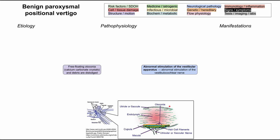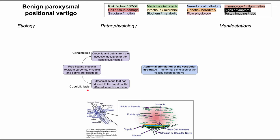When otoconia — those little stones — break off and float around, that's when problems start. The BPPV pathophysiology can take one of two directions. Canalolithiasis is when otoconia and debris from the acoustic macula enters the semicircular canals, working their way into the circular parts. Cupulolithiasis is when otoconial debris adheres to the cupula of the affected semicircular canal — the organ that helps determine which direction things are moving — and when otoconia stick to that, you also have a problem.